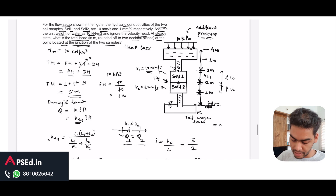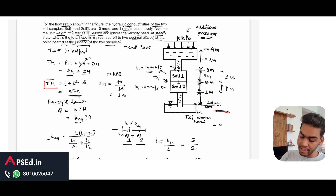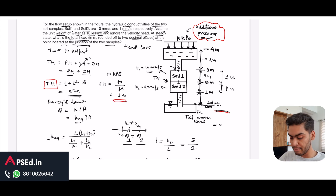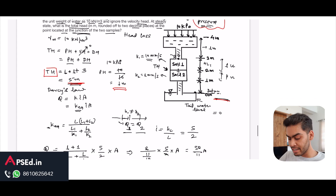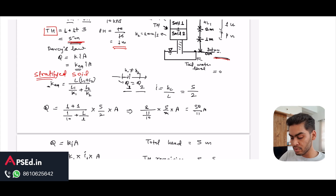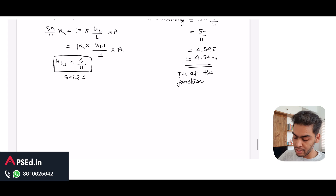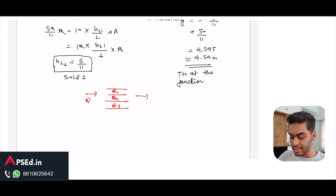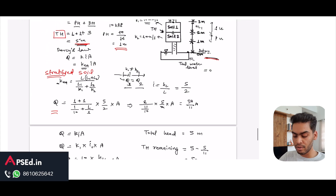To summarize: the key steps were taking the tail water level as datum, accounting for the additional applied pressure to get a total head of 5 meters, then applying the equivalent permeability concept for series stratified soils. Note that if soils were arranged horizontally with flow in parallel, the head loss in each layer would be the same but discharge would differ — that's the basic understanding of stratified soils needed to solve all such questions.